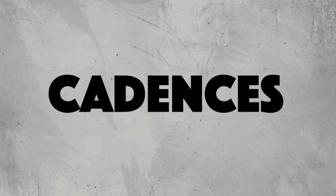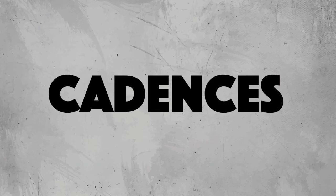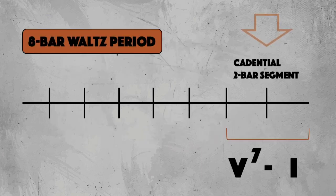Just like in baroque improvisation, one starts with cadences, as these are important stylistic signifiers. A 5-1 cadence won't finish every phrase, but definitely a lot of phrases, so it's clever to have a good stock of ending melodies above this progression. Here is a bunch of examples, always in major and minor.